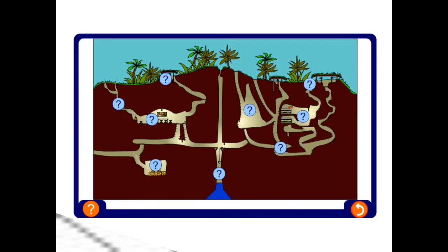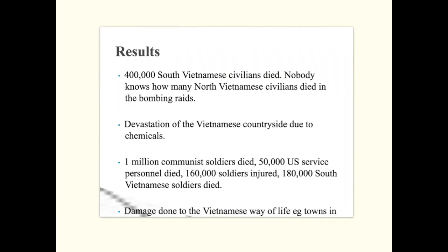The National Liberation Front also had a system of tunnels which stretched 200 miles underneath South Vietnam. They could launch hit-and-run raids from a tunnel 20 miles from Saigon, and the tunnels included an underground hospital with very basic medical equipment.